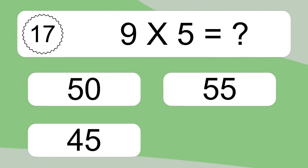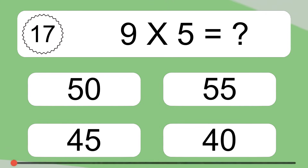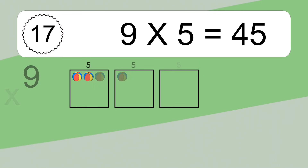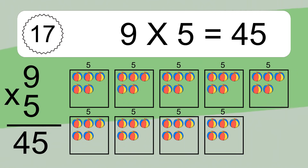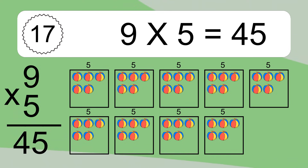9 times 5 equals what? 9 times 5 equals 45. We have 9 boxes and each box has 5 colorful balls inside. If you count all the balls in all the boxes together, you will have 9 times 5 balls. This equals 45 balls.